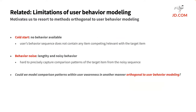Despite being successful in practice, user behavior modeling still has several inherent limitations. On the one hand, it often suffers from the cold start problem in the new user case, where the user's behavior sequence does not contain any item competing or relevant with the target item — that is, there are no valid comparison patterns in the user behavior sequence. On the other hand, when the length of the user behavior sequence increases, most of the items in the sequence could be irrelevant to the target item. It is difficult to precisely capture comparison patterns from the noisy sequence — that is, the behavior noise problem. Our question is: could we model comparison patterns within user awareness in another manner, orthogonal to user behavior modeling?